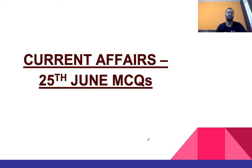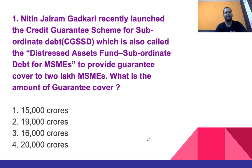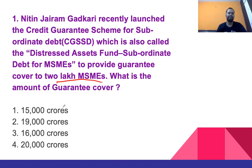Current Affairs 25th June MCQs. Question 1: Nitin Jayaram Gadkari recently launched the Credit Guarantee Scheme for Subordinate Debt, also called the Distressed Asset Fund Subordinate Debt for MSMEs, to provide guarantee cover to 2 lakh MSMEs. What is the amount of guarantee cover? Options: 15,000 crore, 19,000 crore, 16,000 crore, or 20,000 crore. The right answer is 20,000 crore.